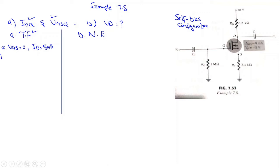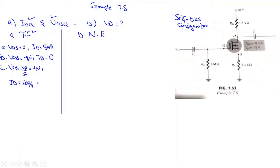So the first point is (0, 8 mA). The second point is when VGS = VP = minus 8 volt, ID = 0. The third point is when VGS = VP/2 = minus 4 volt, ID = IDSS/4 = 8/4 = 2 milliampere. So the third point is (−4 V, 2 mA).